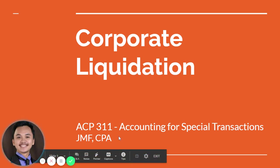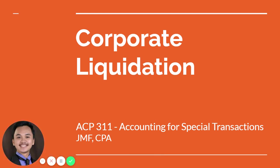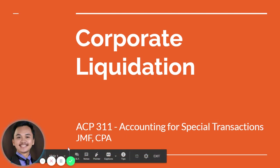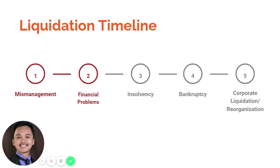Hello guys, good day. Welcome to another video lecture in ACP 311: Accounting for Special Transactions. In this video lecture we will be discussing corporate liquidation. Just like a partnership, a corporation could also go into liquidation where corporate operations will cease or stop. This may occur due to possible company mismanagement, such as continued losses from operations, over-extended credit to customers, poor management, or working capital failure to react to changes in economic conditions.